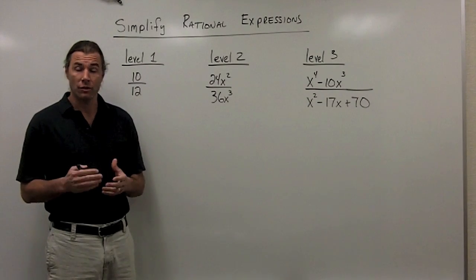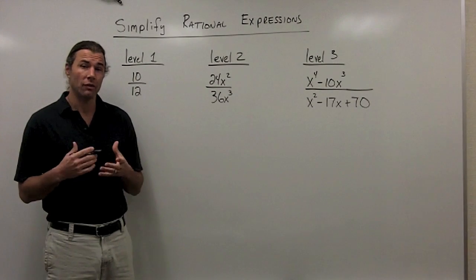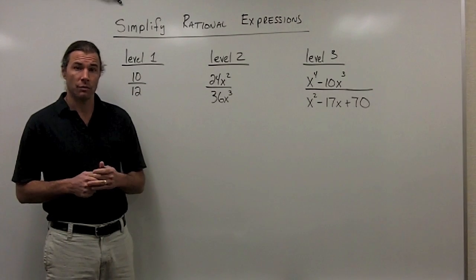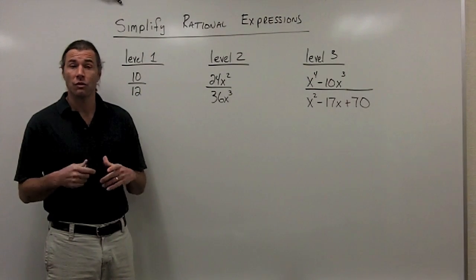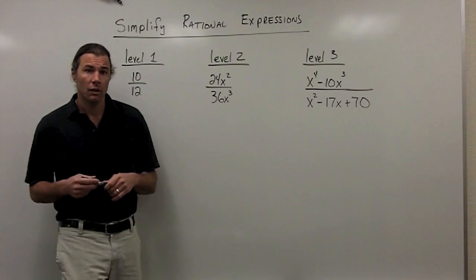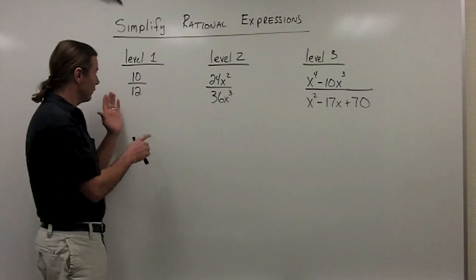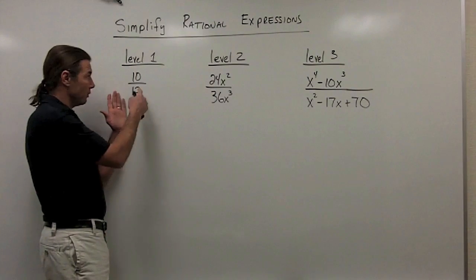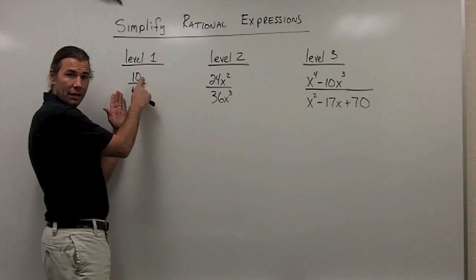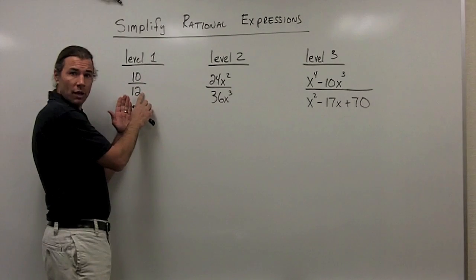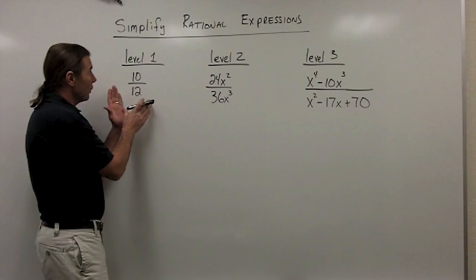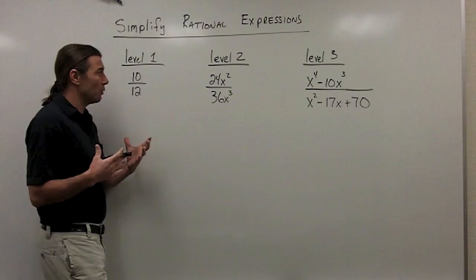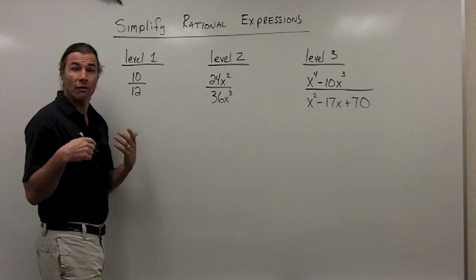In this video, we're going to take a look at rational expressions, and we're going to learn how to simplify these rational expressions. You've already actually worked with rational expressions before in your life. A rational expression is just a fraction with an expression, and an expression can be as simple as a number. For example, here I have a rational expression — a fraction where the expression in the numerator is 10 and the expression in the denominator is 12. So you've already worked with these rational expressions plenty of times. However, now when we start to get into algebra, we're going to start to work with expressions that also have variables in them.